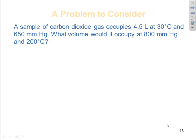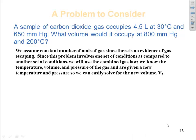Let's look at an example. A sample of carbon dioxide gas occupies 4.5 liters at 30 degrees C and 650 millimeters of mercury. What volume would it occupy at 800 millimeters of mercury and 200 degrees C? We assume a constant number of moles of gas since there is no evidence of gas escaping. Since this problem involves one set of conditions compared to another, we use the combined gas law. We know temperature, volume, and pressure, and are given a new temperature and pressure, so we can solve for the new volume.